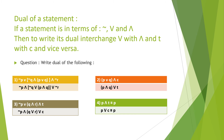So negation P stays as is. The disjunction sign is replaced by conjunction. Then negation Q stays. The AND becomes OR. Inside the round bracket, OR is replaced by AND. The last AND becomes OR. Therefore the dual is: negation P ∧ negation Q ∨ (P ∧ Q) ∨ negation R.